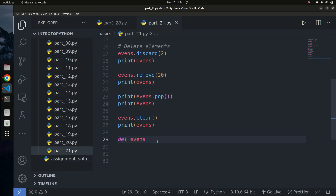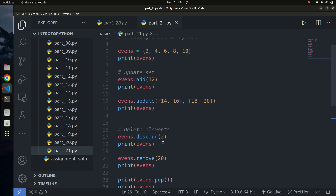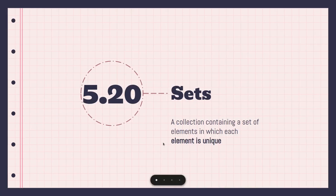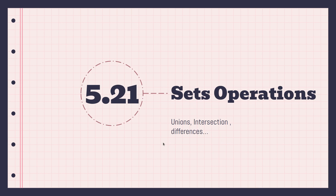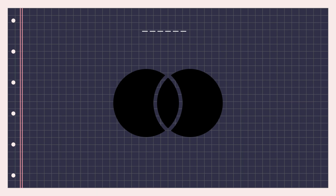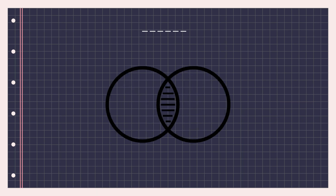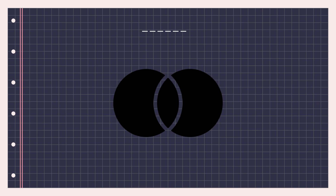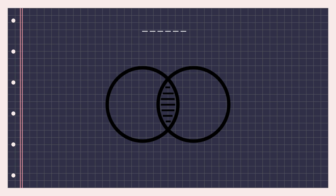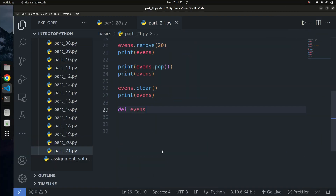Now that we've covered creating, adding, and deleting from sets, let's look at set operations. There are three main operations: union, intersection, and difference. Union combines elements from both sets without duplicates. Intersection finds what is common to both sets. Difference finds what is in one set but not the other.